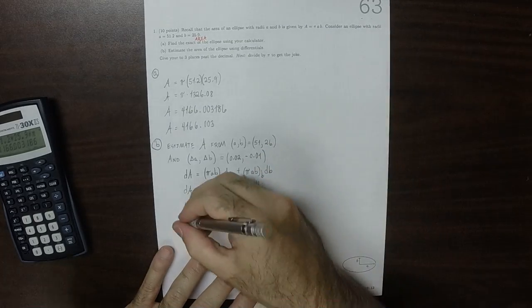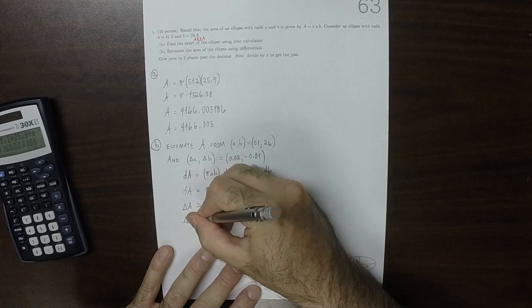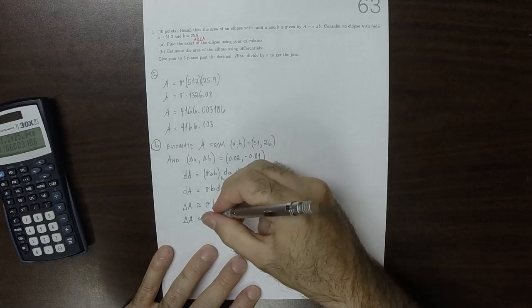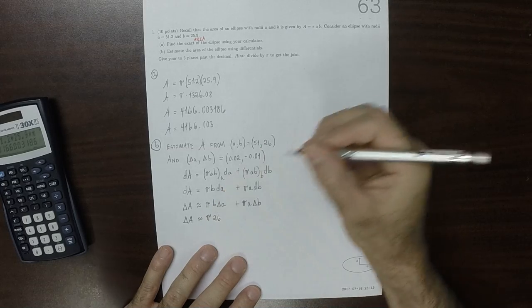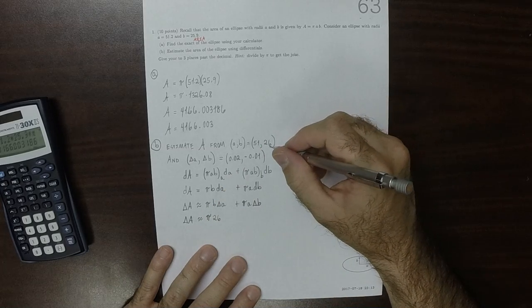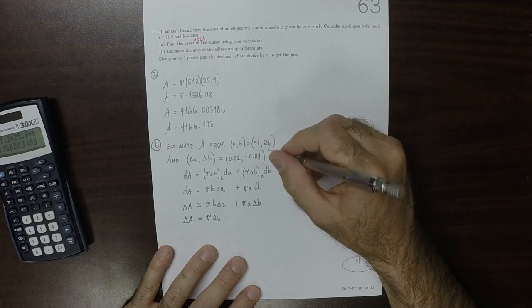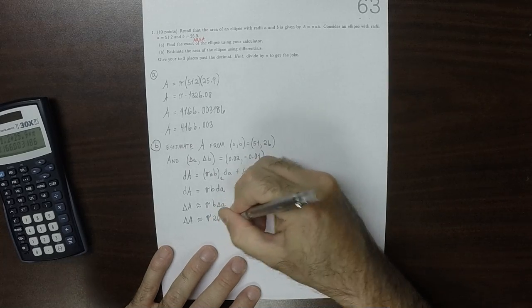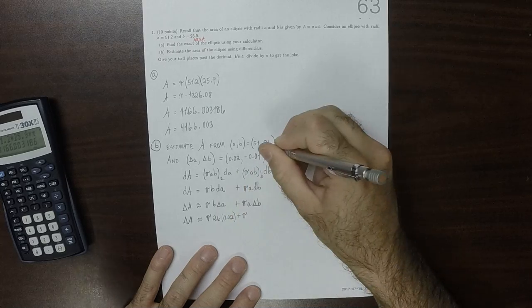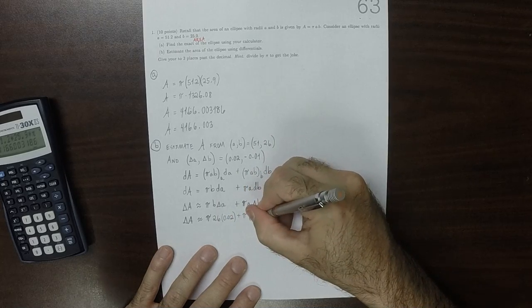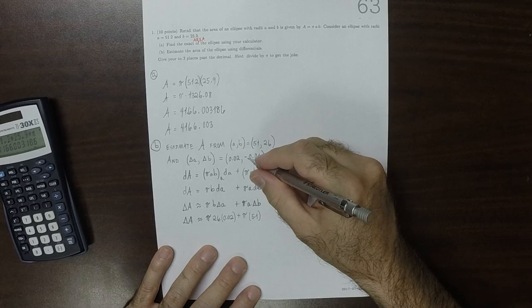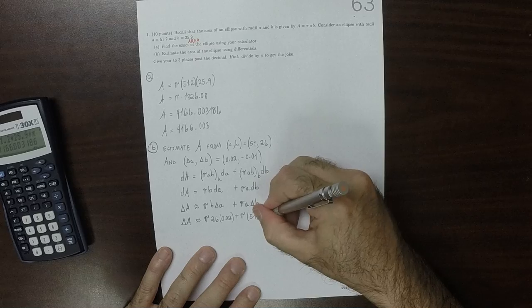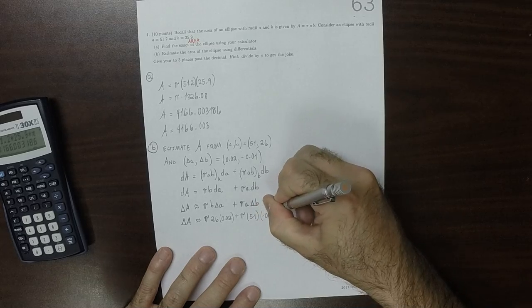Plugging in all the bits, we get π times b equals 26 times Δa equals 0.02, plus π times a equals 51 times Δb equals negative 0.01.